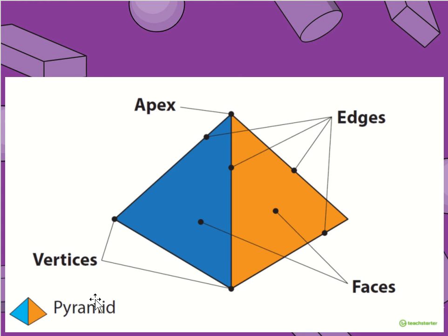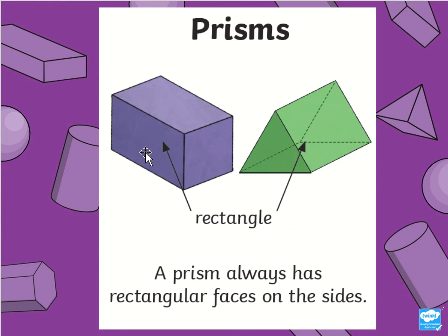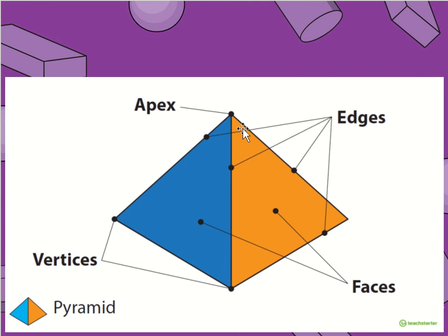For a pyramid, the faces on the sides are triangle faces, and the vertices — which are the corners at the edges — meet up at the top to form an apex. So for a pyramid we usually have triangles as the faces on the sides, then an apex at the very top, and a shape down the bottom as the base. Prisms have rectangular sides and pyramids have triangular sides which meet at the top to form an apex.